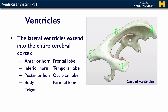There's also this area here, which is kind of shaped like a triangle — this is referred to as the trigone. It's an area where the body, the inferior horn, and the posterior horn all come together.